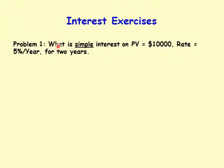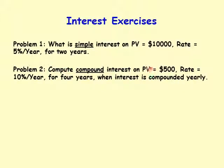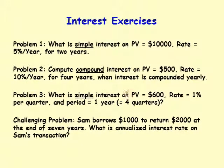Let's do some exercises. Exercise one: what is the simple interest on a principal value of ten thousand dollars at a rate of five percent per year for two years? Exercise two: compute compound interest on a principal value of five hundred dollars at ten percent per year for four years, with interest compounded yearly. Exercise three: what is the simple interest on a principal value of six hundred dollars at one percent per quarter for one year, which is four quarters?